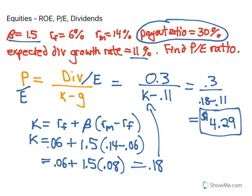So that's the price-to-earnings ratio — it's the relationship between the price of the stock and the earnings of the company. The important concept here is the payout ratio: 30% means that for every dollar earned in excess, the company pays out 30% in dividends and retains 70% as retained earnings.